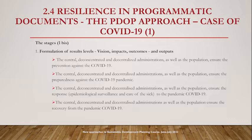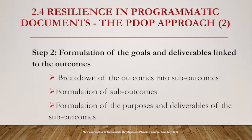The same will be done regarding preparedness, and the same for response, and so on for each of the phases of resilience. Similarly, the second step involves formulating the purpose and deliverables linked to each of the outcomes obtained in the previous step. We need to break down the outcomes to have a specific outcome for each sub-group, and then after formulating the sub-outcomes, we formulate the purpose and deliverable linked to each. This has been shown in module two of the course.